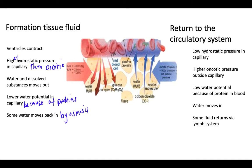Return to the circulatory system: at the venule end, we've got lower hydrostatic pressure and higher oncotic pressure. We've got even lower water potential because of protein in the blood and all the water in the tissue fluid, so water moves in by osmosis.